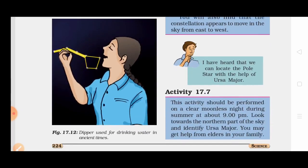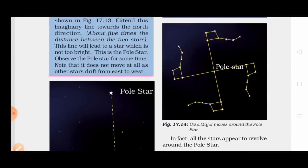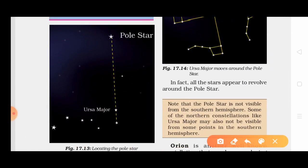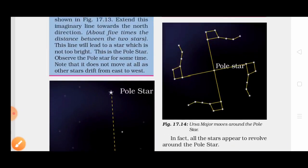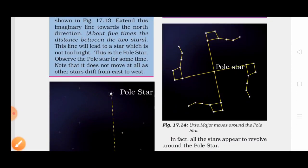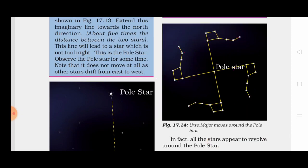We can locate the pole star with the help of Ursa Major. Looking at the figure, the pole star will not change its position. You can see the pole star using the handle and bowl of Ursa Major. If you observe some time later, the shape of Ursa Major changes its direction, but the pole star remains fixed in its place.